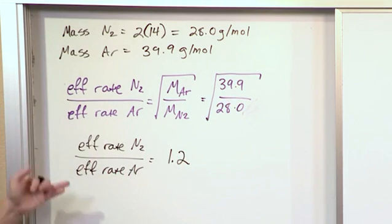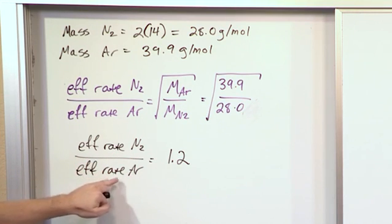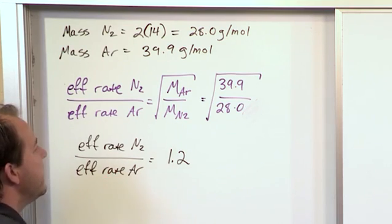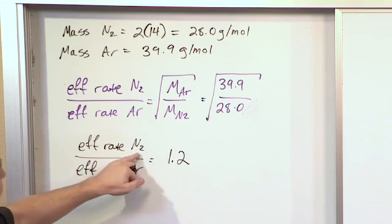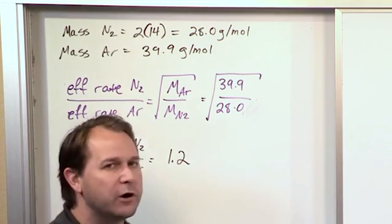What does this mean? Notice the rate of effusion of the numerator divided by the rate of effusion of this other gas is greater than 1. It's 1.2. That means that the effusion rate of nitrogen is 1.2 times greater than the effusion rate of argon.